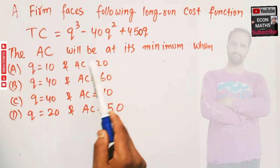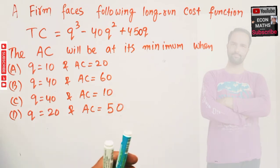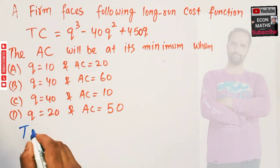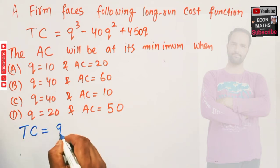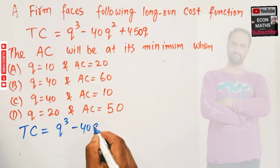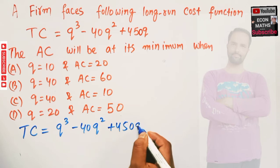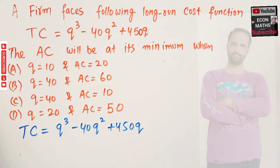The options given are: when output is 10 average cost is 20; similarly 40, 60, 40, 10 or 20, and 50. So what we are given is total cost equals Q cubed minus 40Q squared plus 450Q. This is our total cost. We need to find the average cost first.